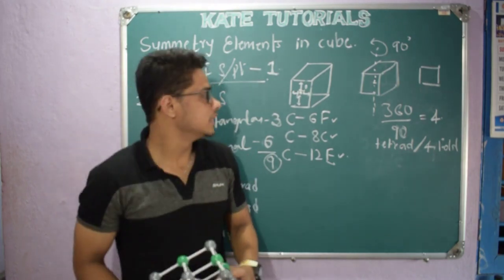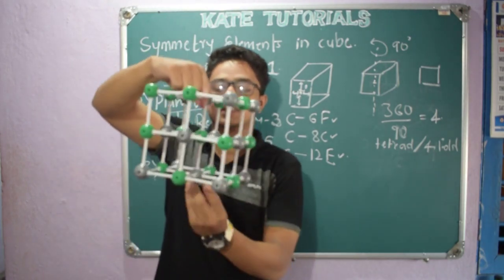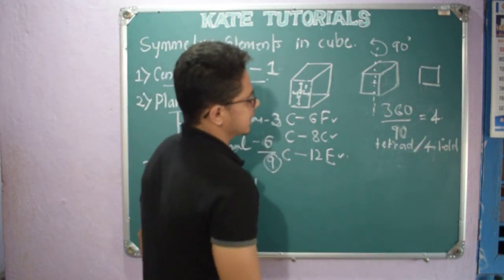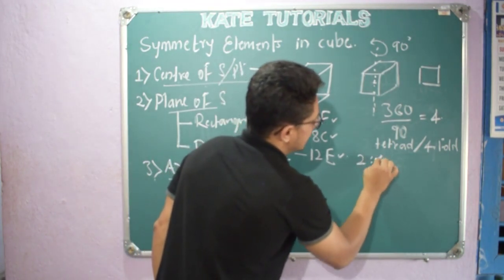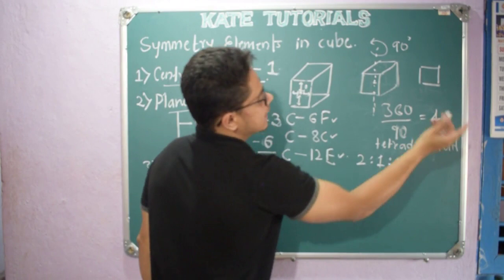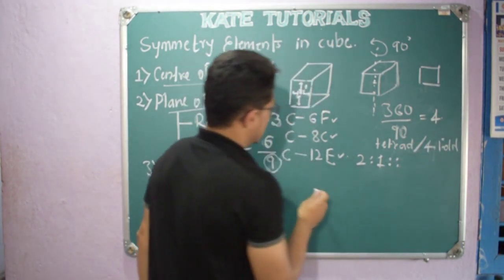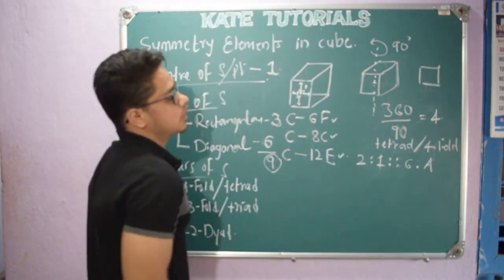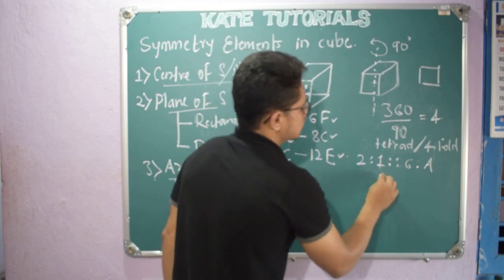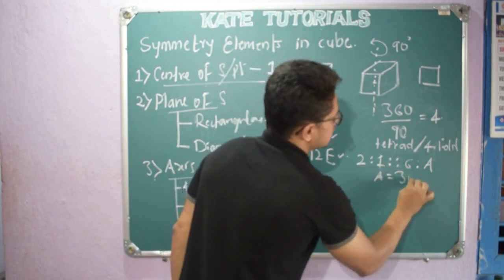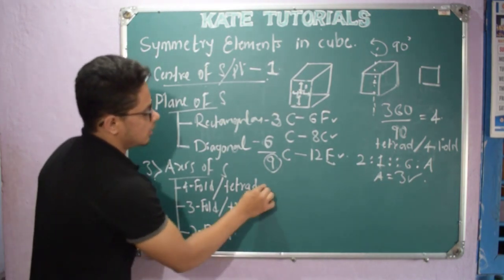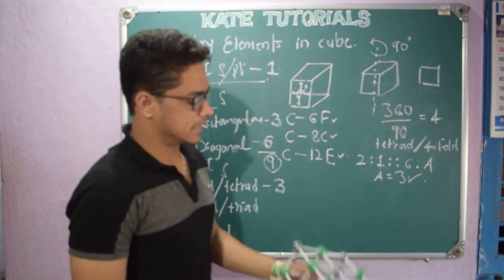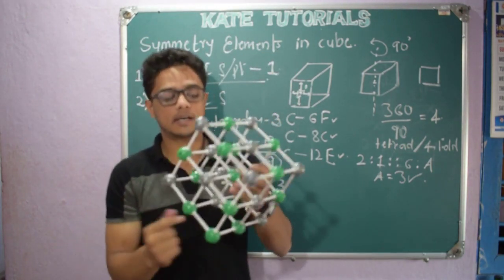The axis passes through two faces, giving one tetrade axis of symmetry. Two faces have one axis of symmetry. In a cube we have six faces, so six divided by two gives three. Therefore we have three tetrade or fourfold axes of symmetry, because the axis passes through the face center, through the center of symmetry, and out through the opposite face.